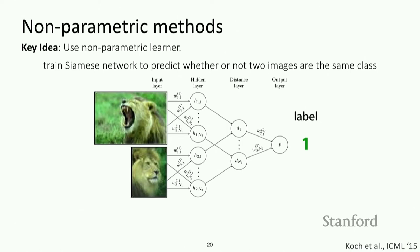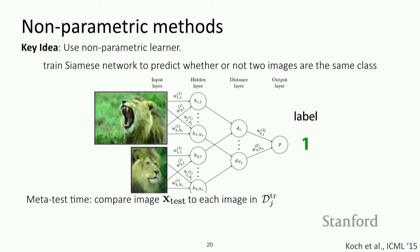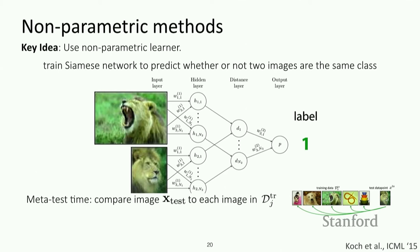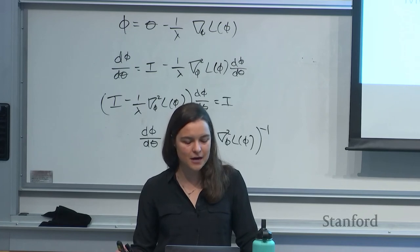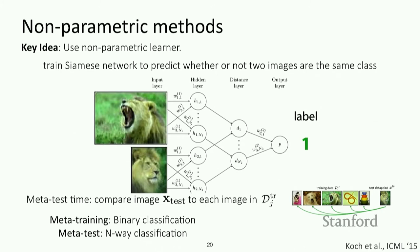At meta-training time we do pairwise comparisons. At meta-test time, to do few-shot classification, we compare each test image X_test to each image in the training data for that task and output the label corresponding to the closest image. For example, if the classifier outputs 0.9 for the third image and 0.2 for the second image, we output the label corresponding to the image with the highest likelihood of matching the test image. This is pretty nice and simple: during meta-training we train a binary classifier, and at meta-test time we perform n-way classification via pairwise comparisons.